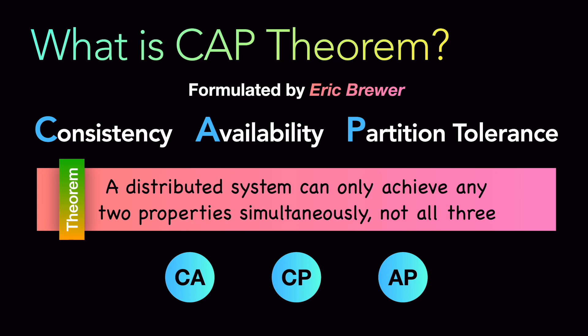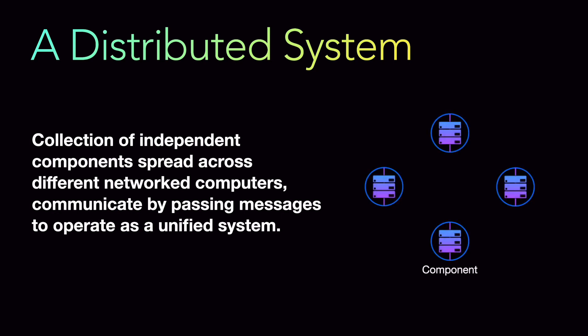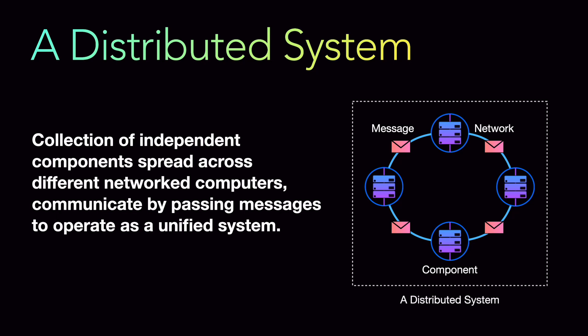First, let's take a look at what is a distributed system. A distributed system is a collection of independent components which are spread across different network computers or servers, and they communicate by passing messages to operate as one unified system. So if we take a look at an illustration — let's say we have four components and they are all connected over the network, communicating with each other via messages — this entire thing can be considered a distributed system.